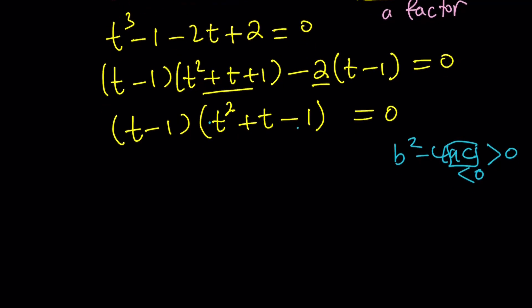Whenever you have a and c with opposite signs, in other words if ac<0, b²-4ac is always going to be greater than 0 which means we're going to have two real solutions. Now let's go ahead and find them. t=1 we know it, the other ones are going to be -b±√(b²-4ac) that's going to give you √5 divided by 2.